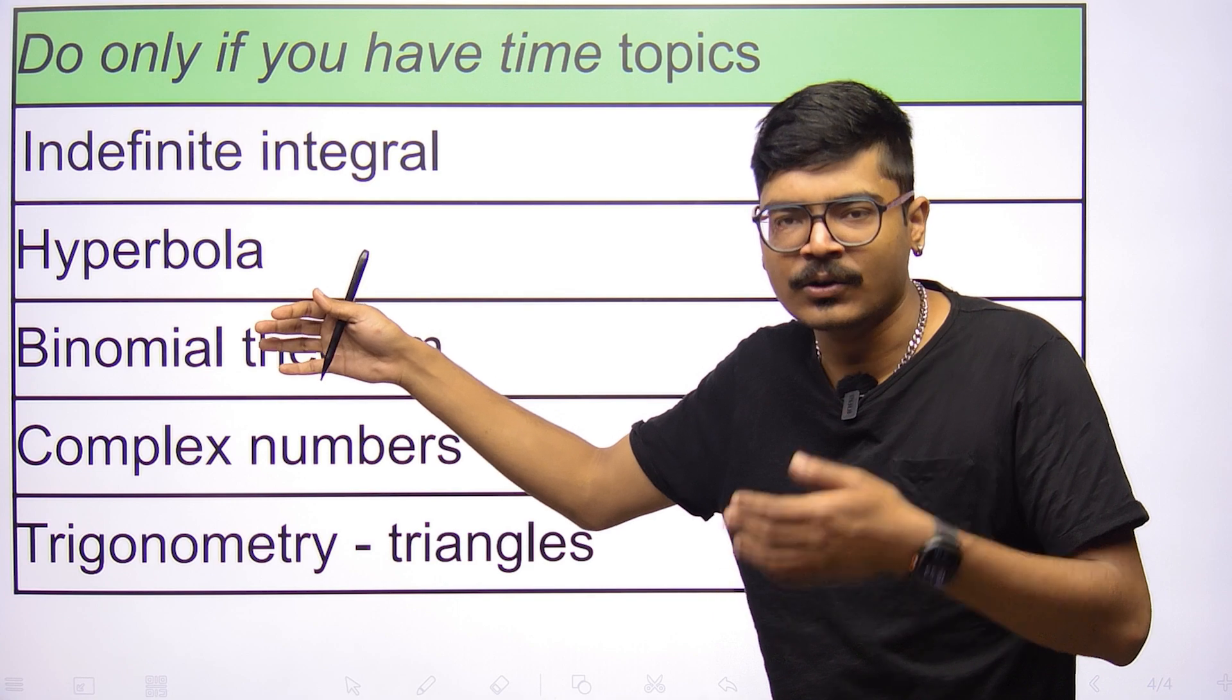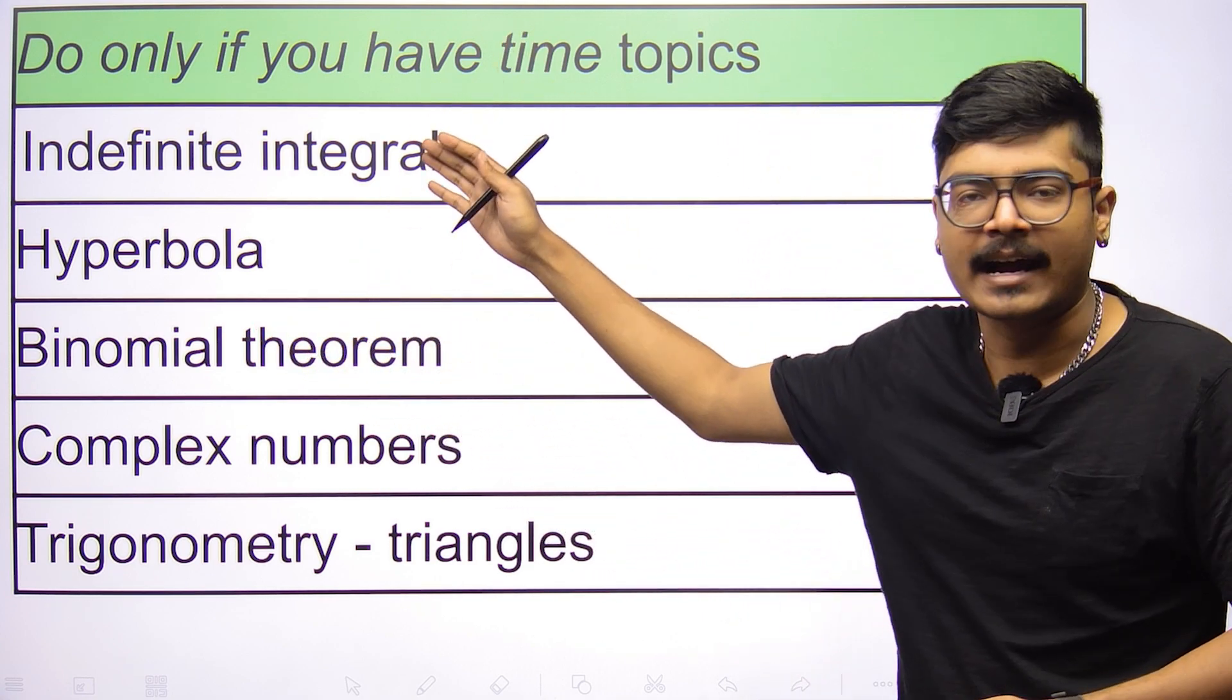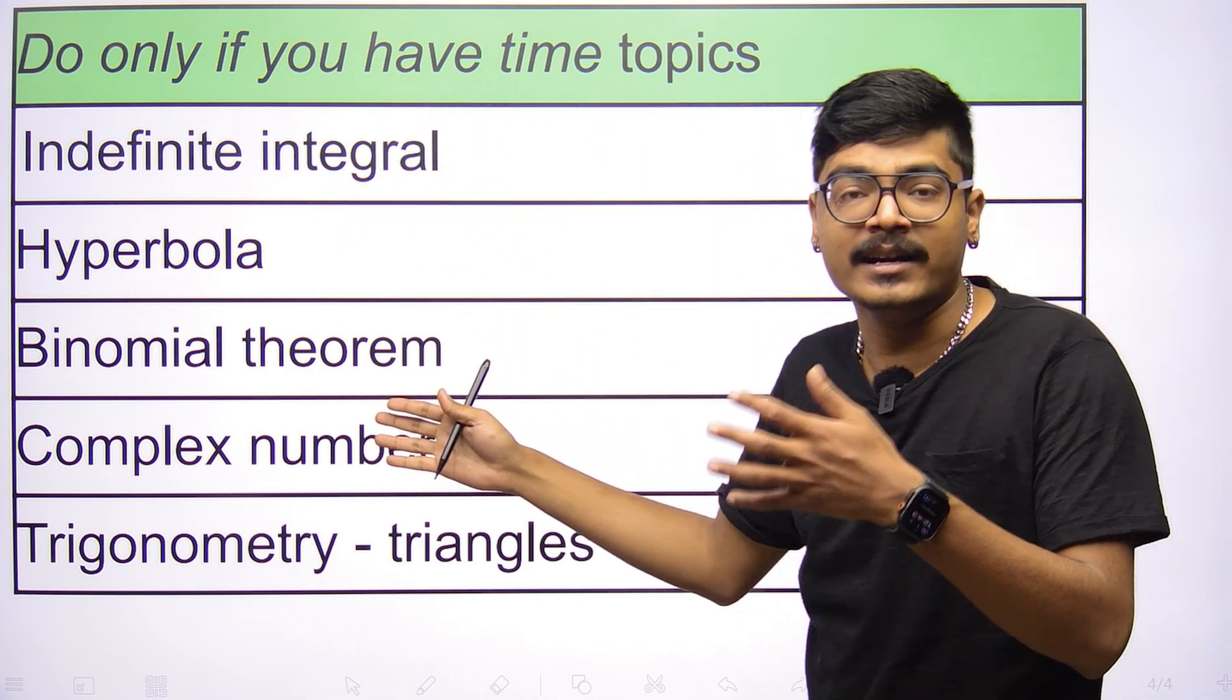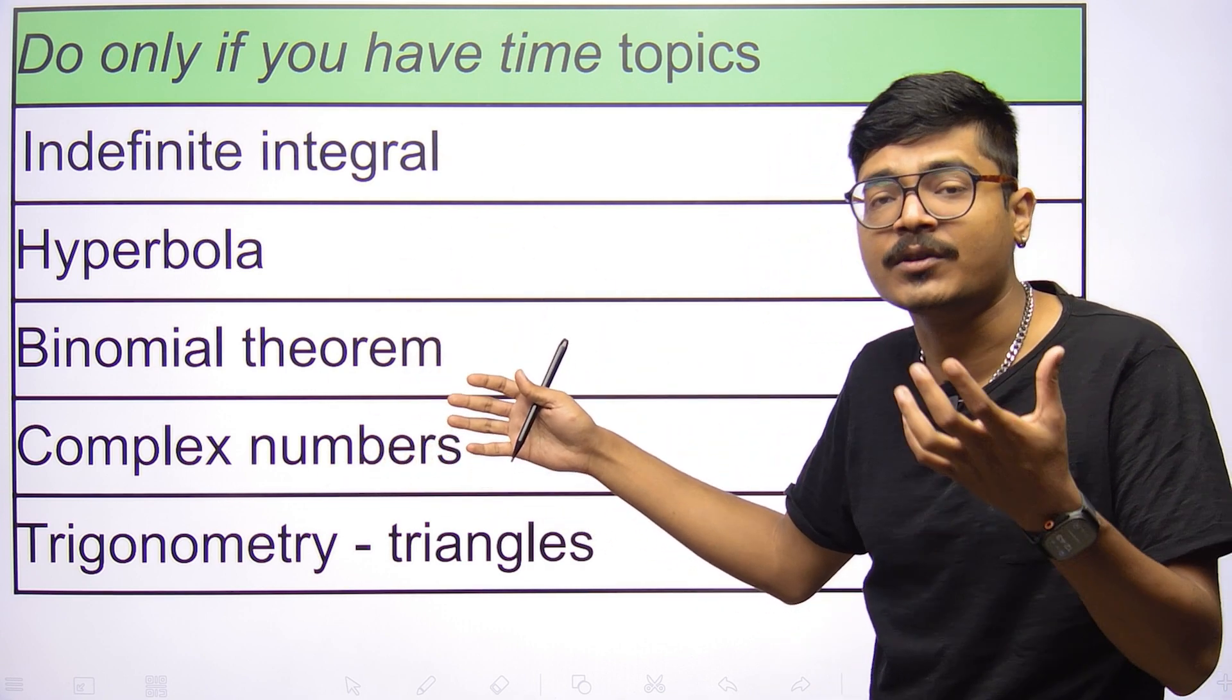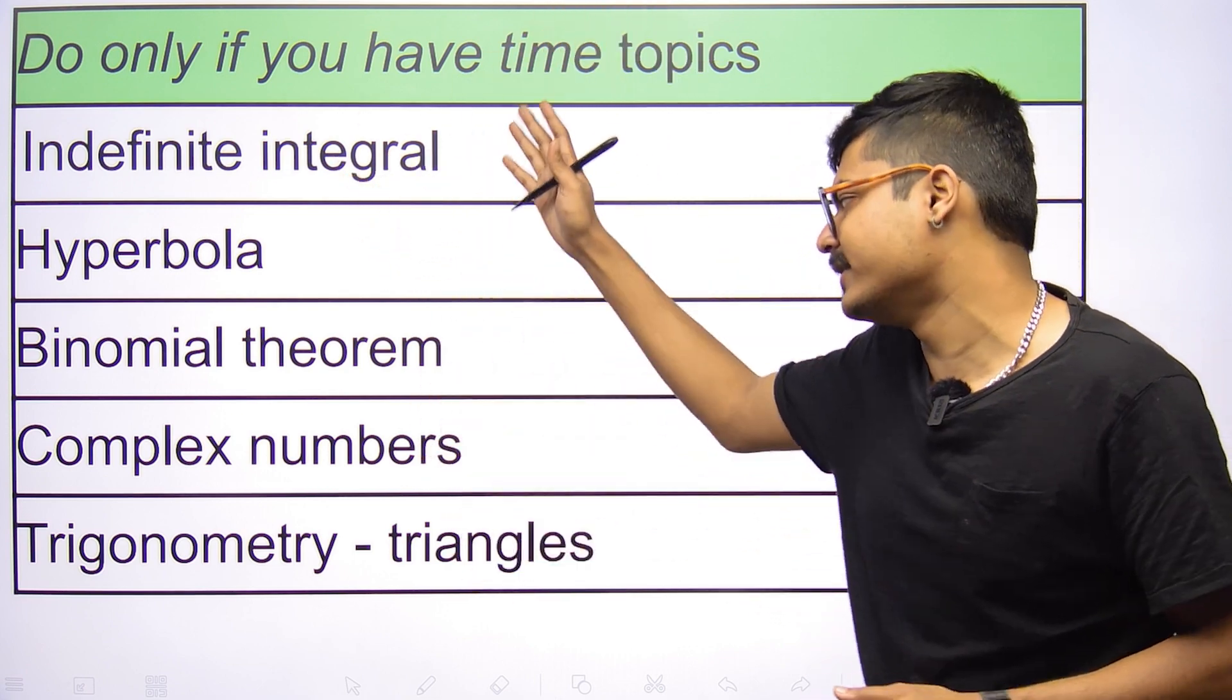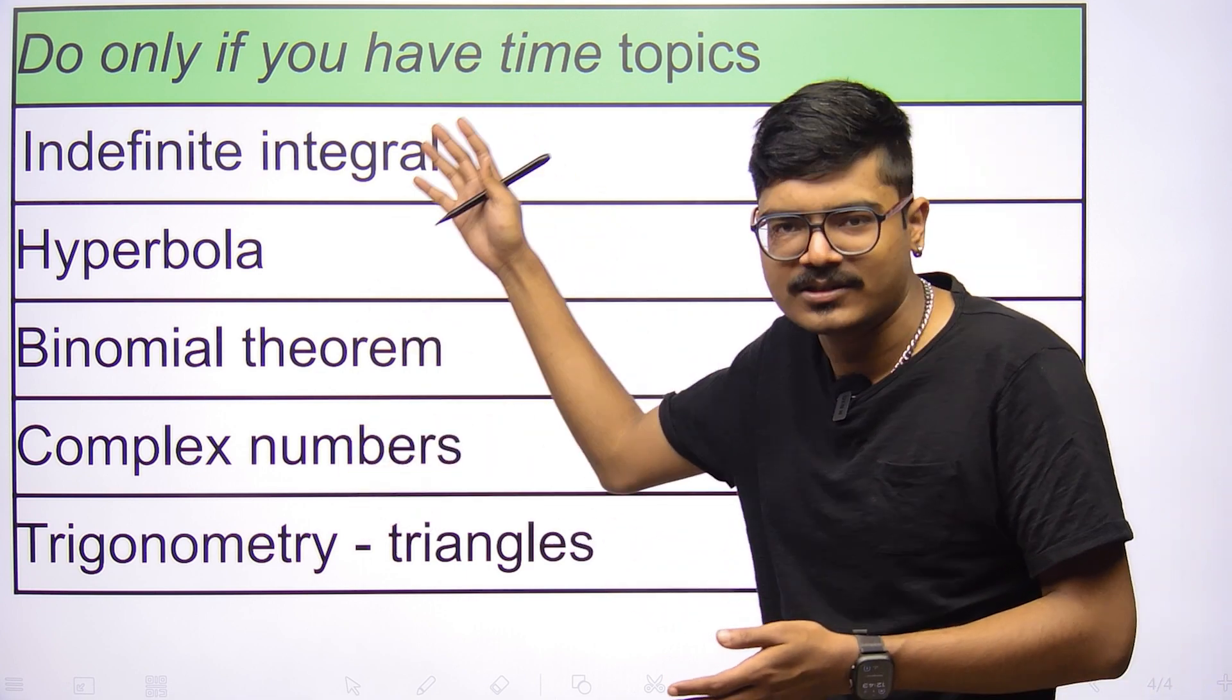Talk about indefinite integrals, we know you have to mug up a lot of formulas, there are different techniques. This comes under that category. Same goes for hyperbola, binomial theorem, complex numbers, there are different variants, there's geometry of complex numbers, algebraic properties of complex numbers, so these are slightly longer chapters. So you need more time, you have to prepare a lot, you have to remember a lot. So once you're done with that, then you can approach these topics, but these are also just slightly harder than them, but if you have time, please do go for these chapters.